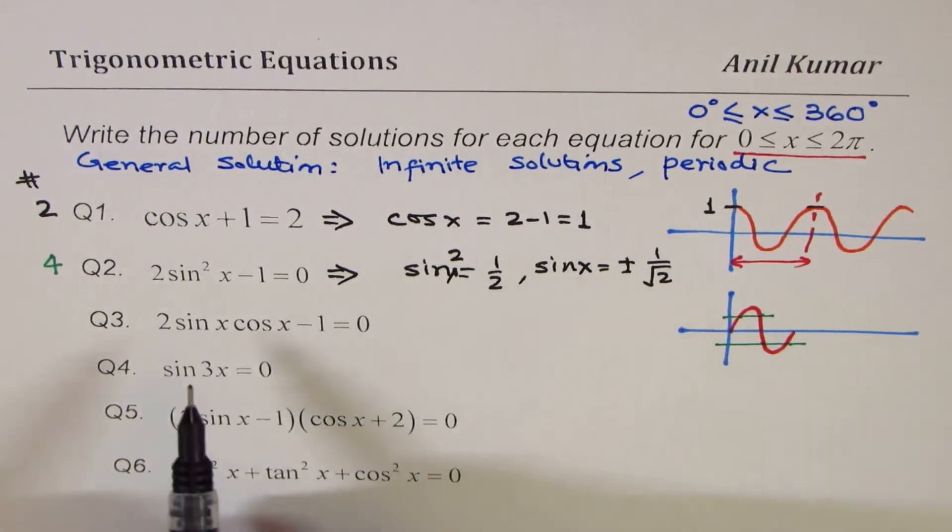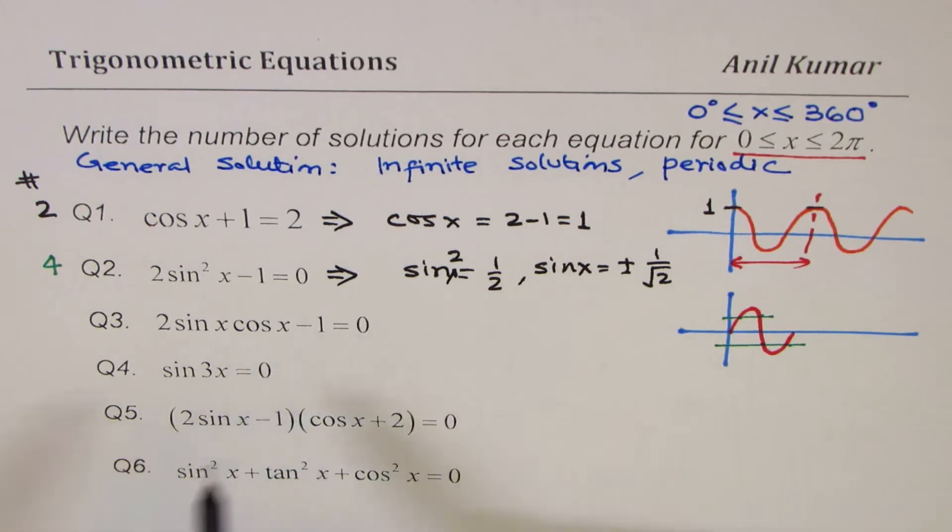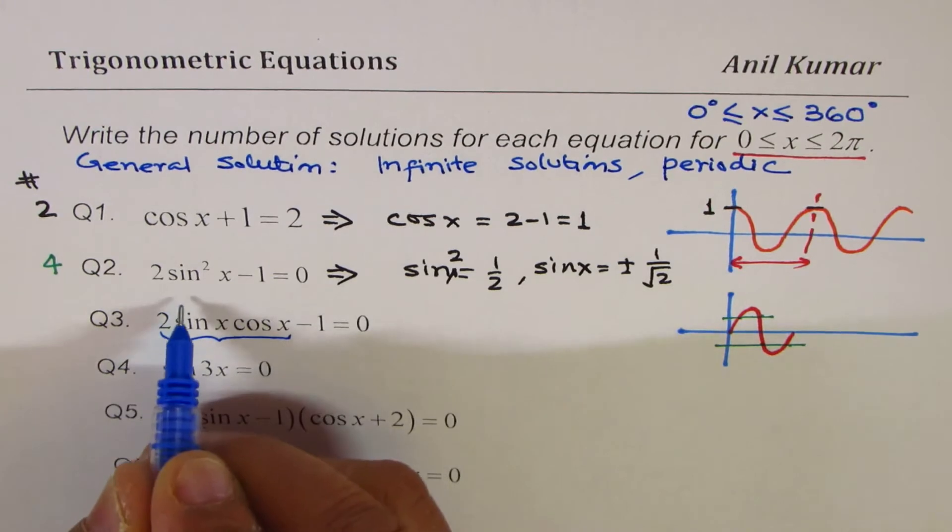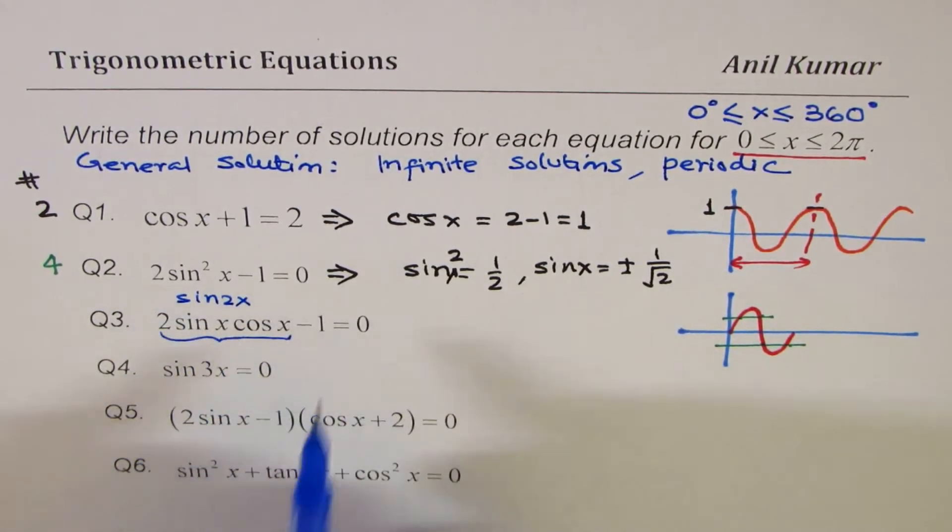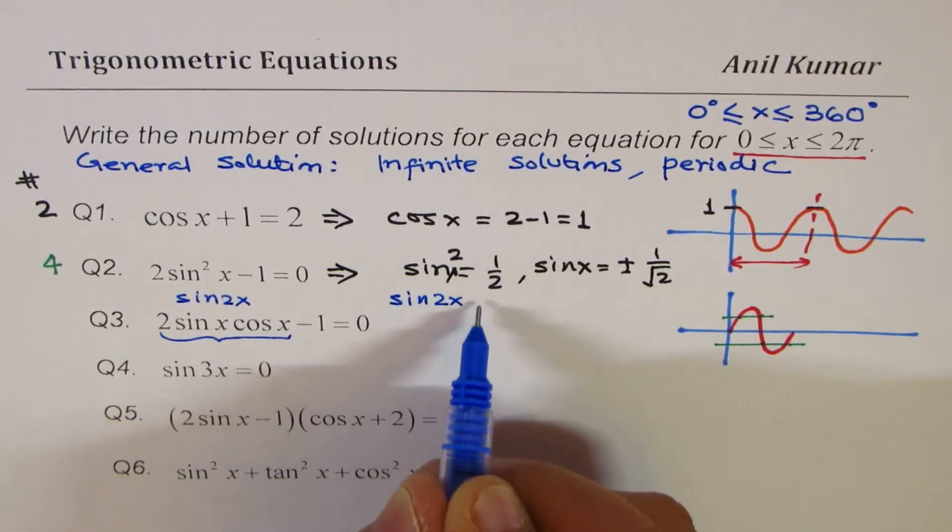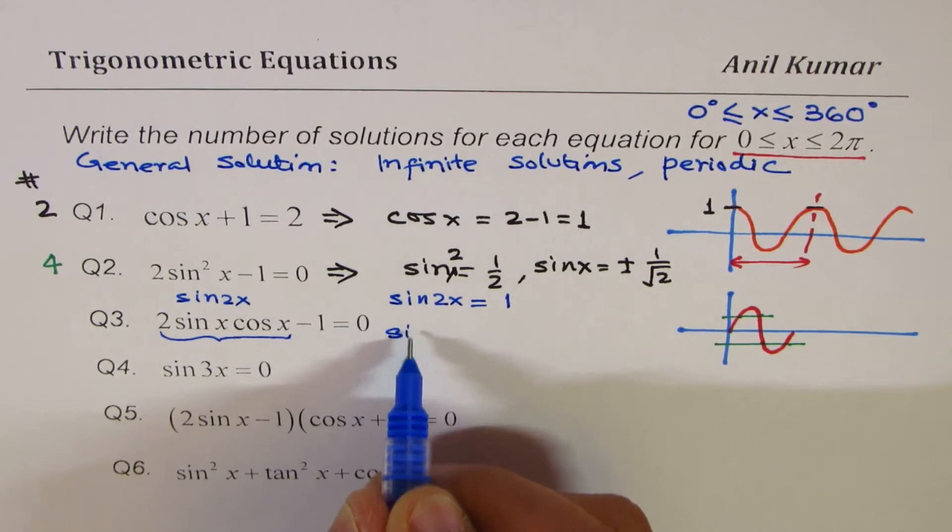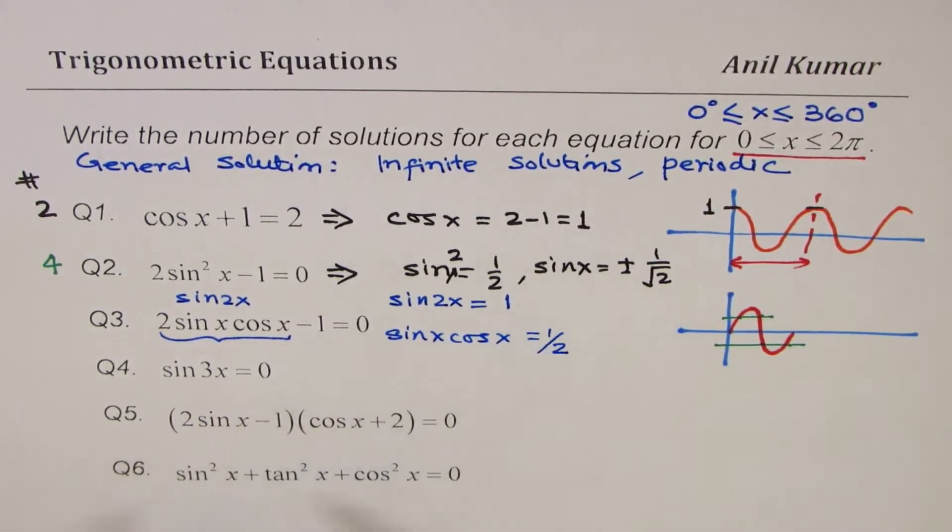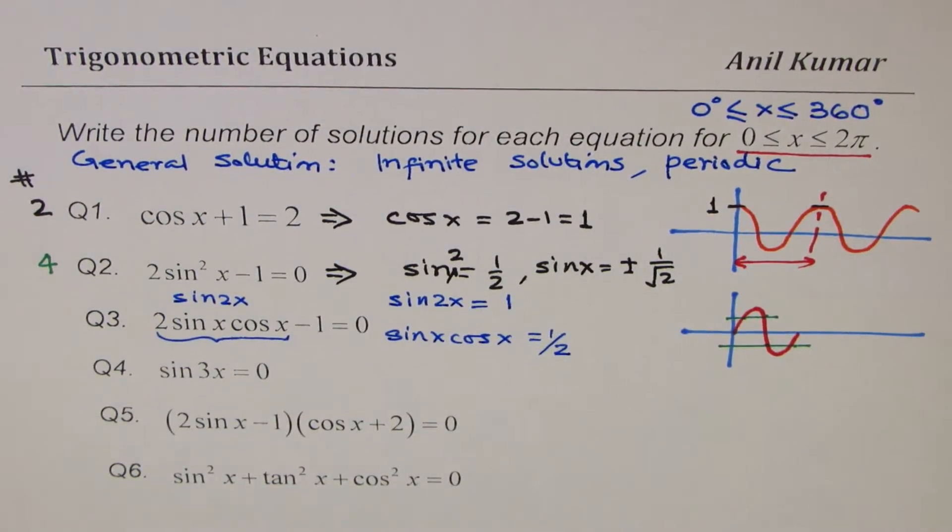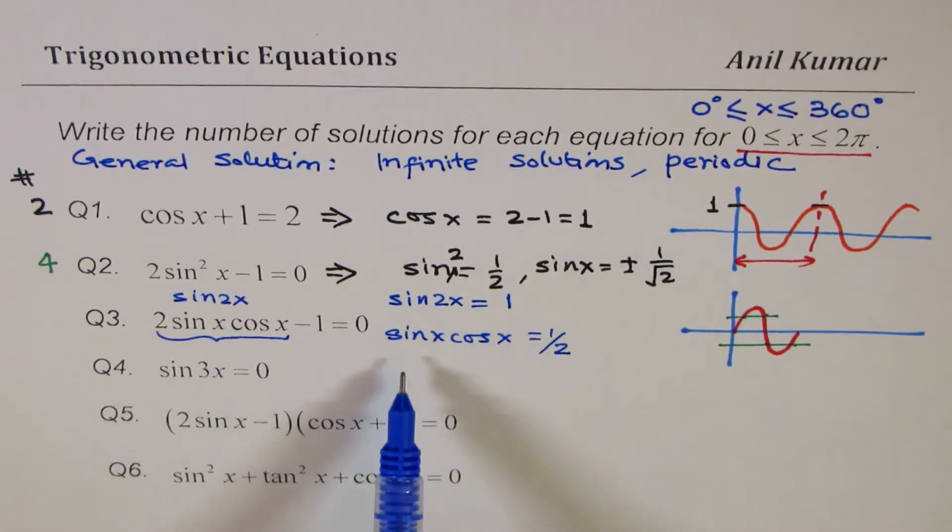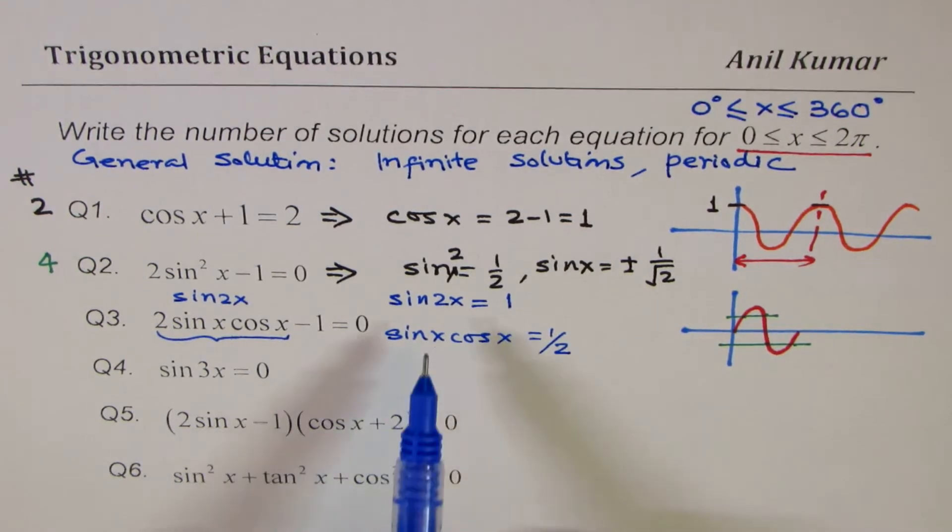The next is 2sinx cosx - 1 = 0. Some of you who have done compound angles will know that 2sinx cosx is sin 2x. So we could write this equation as sin 2x = 1. That becomes your equation. Well, if you do not know this, then you could also work with sinx cosx = 1/2. That is fine. As you can see, working with sin 2x = 1 is far better than working with sinx cosx = 1/2. So knowing double angle formulas is actually better.